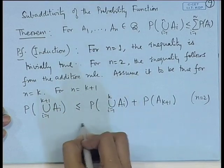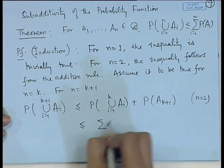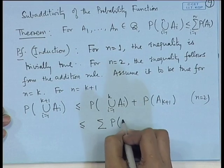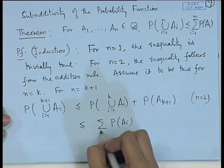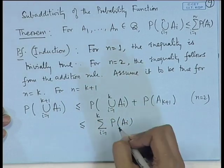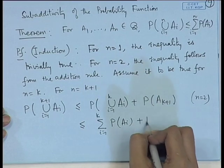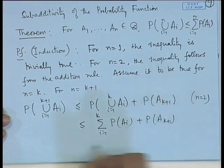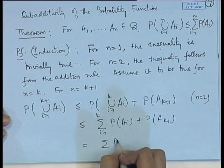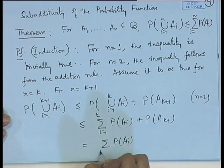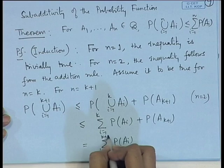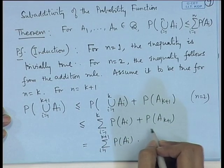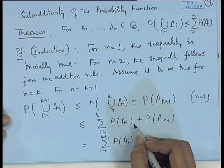Using the assumption that the result holds up to n=k, this becomes less than or equal to the sum of probability of A_i for i=1 to k, plus probability of A_{k+1}, which is nothing but the sum of probabilities for i=1 to k+1. Therefore, by induction the result is true for all n.